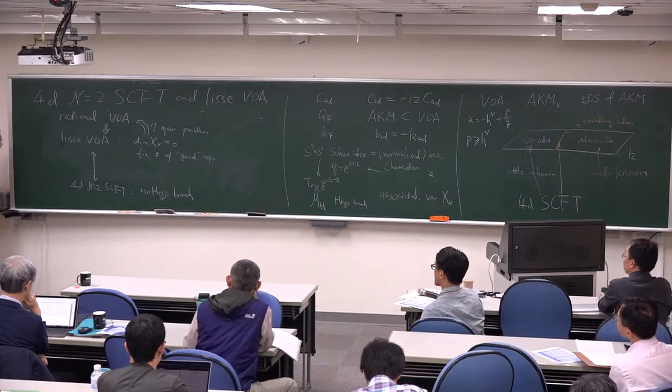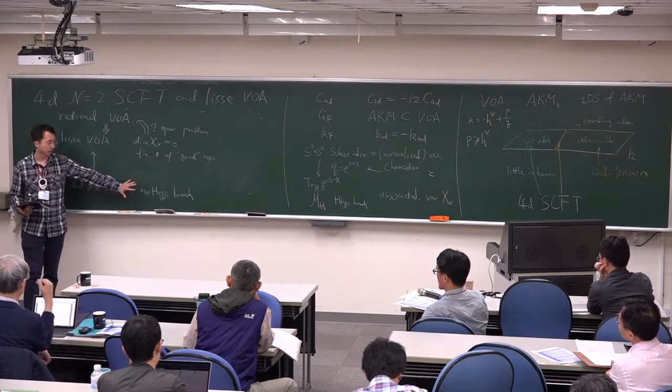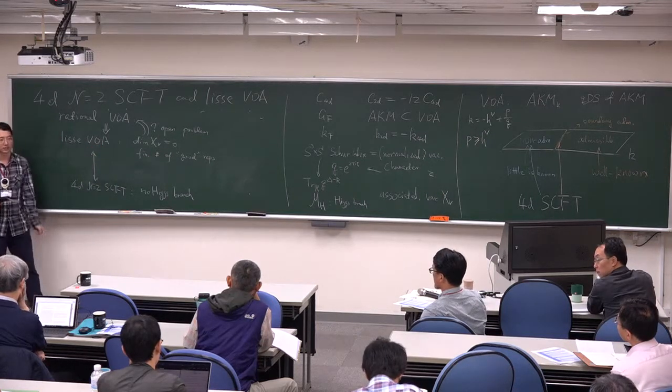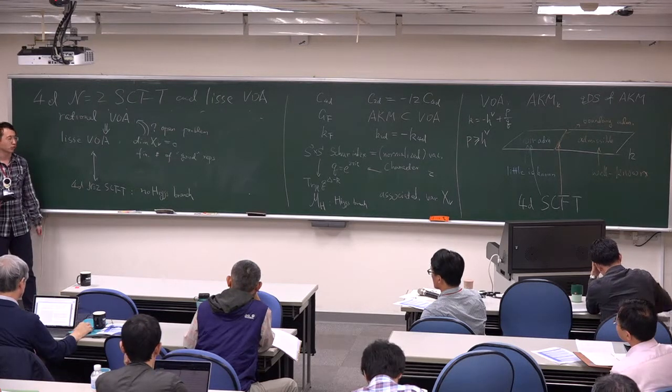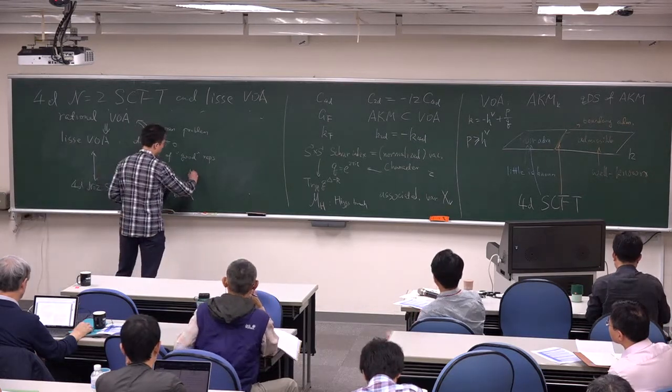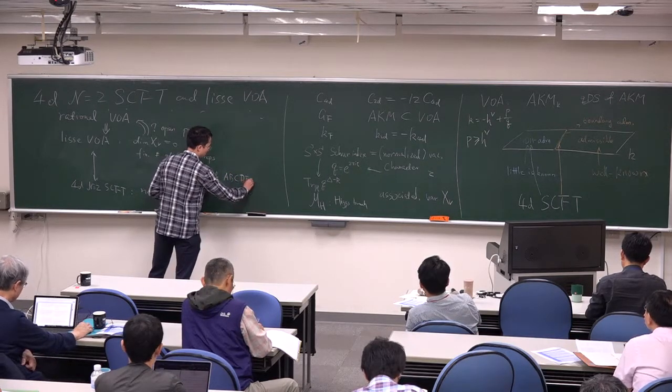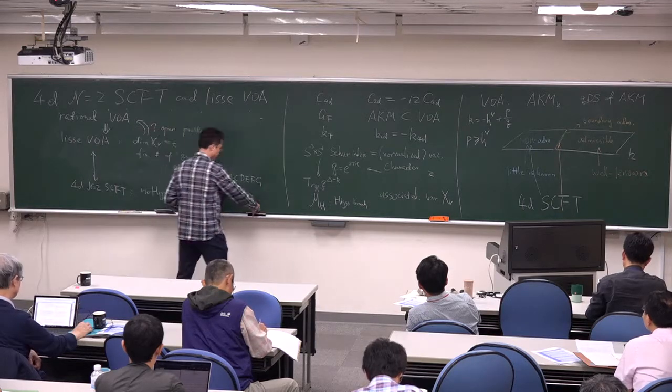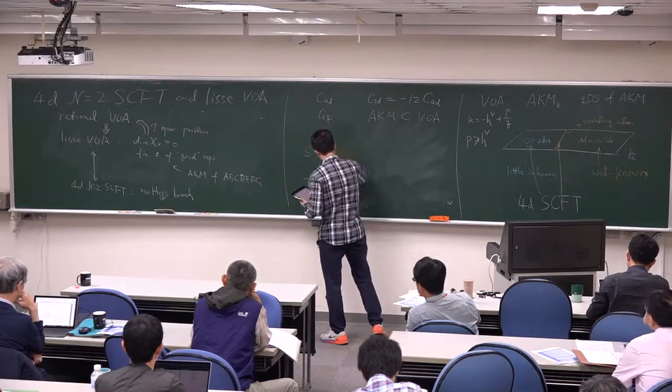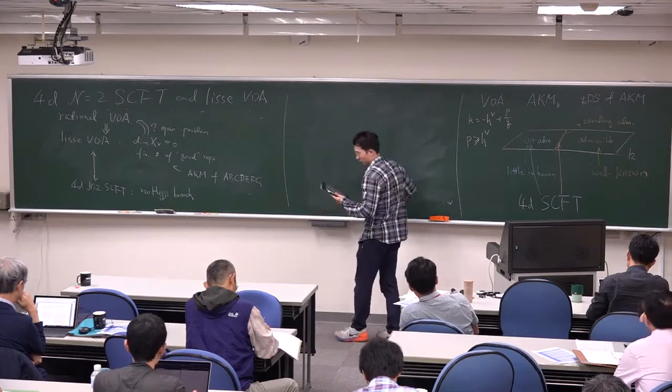So this is the strategy, but I haven't explained the other part of my title. What is the lisse VOA? So talking about VOA, there's one special type called the rational one. And these VOAs always have a finite number of highest weight representations, and their characters form a holomorphic function on the upper half plane, and they are also invariant under the modular transformation. And they have all nice properties. For example, this Virasoro minimal model is one of this rational VOA. So this lisse VOA is actually some sort of singular concept as rational, but a little bit more general. It requires the dimension of the so-called associated variety equal to zero. And it also has a finite number of some mathematically called good representations. And they also have some nice modular properties.